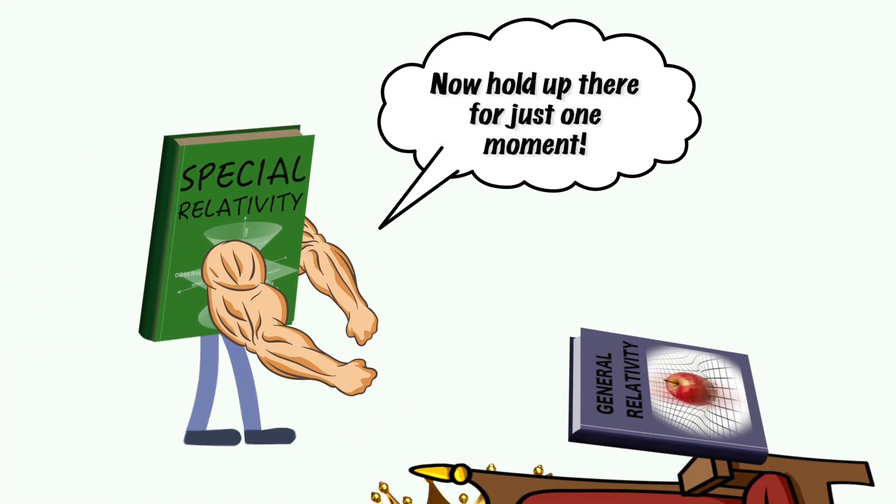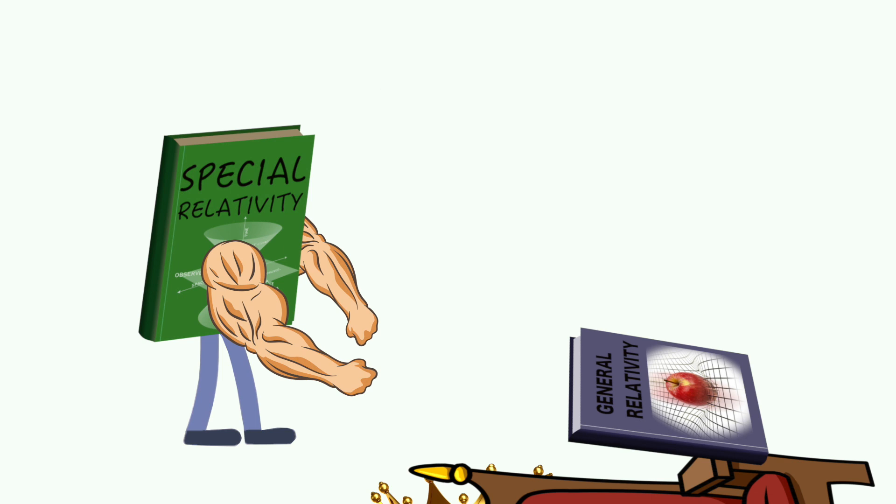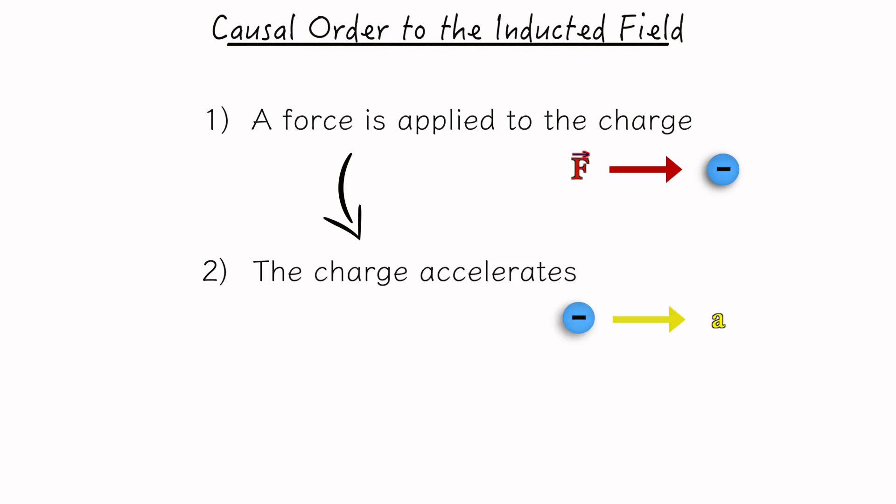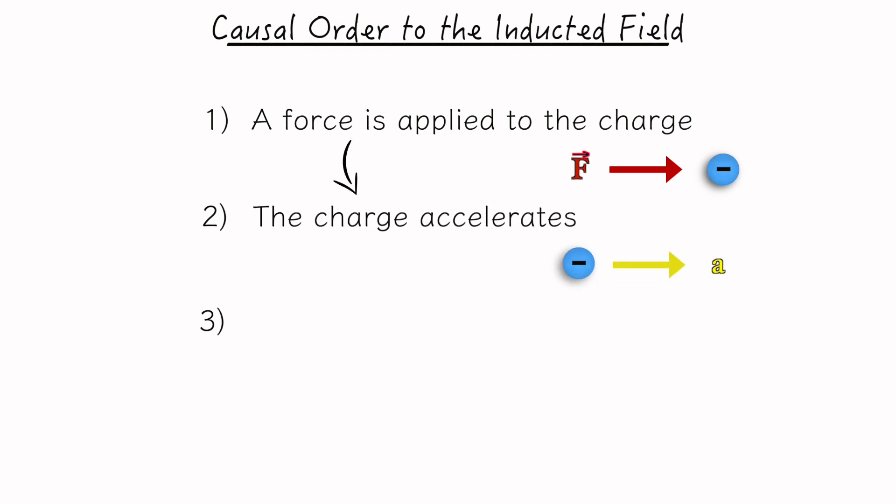Einstein makes two crucial flaws in his reasoning in his 1918 lecture. The first is with his electric charge analogy. While it's true an accelerated charge will induce a changing electric field, there's a distinct causal order to this process that plays an important role. We can break down this order as follows. 1. A force is applied to the charge. 2. As a consequence of 1, the charge accelerates. 3. As a consequence of 2, a changing electric field is induced.